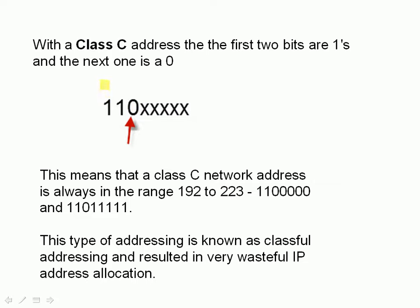For a class C address, the zero moves further right — we've now got two ones, then a zero, plus we don't care what the remaining bits are. Converting back into binary, we have two ones and a zero followed by all zeros, which gives us 192. And two ones and a zero followed by all ones gives us 223. So a class C address has an IP address in the range 192 to 223. Remember, that's the most significant byte.